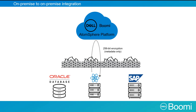The Atom only initiates outbound communication to Atomsphere to communicate the status information for centralized monitoring, as well as to check for any Atom updates.